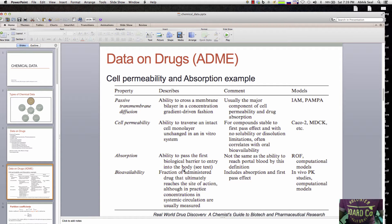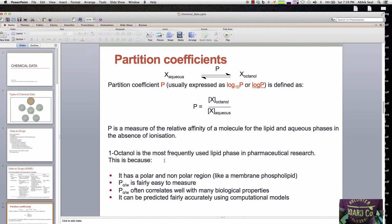How do we model one of these properties? For example, the partition coefficient, which we call log P, or the distribution coefficient, is the ratio of concentration of a compound in a mixture of two immiscible phases at equilibrium - the concentration in octanol and the concentration in the aqueous medium at pH 7.4.